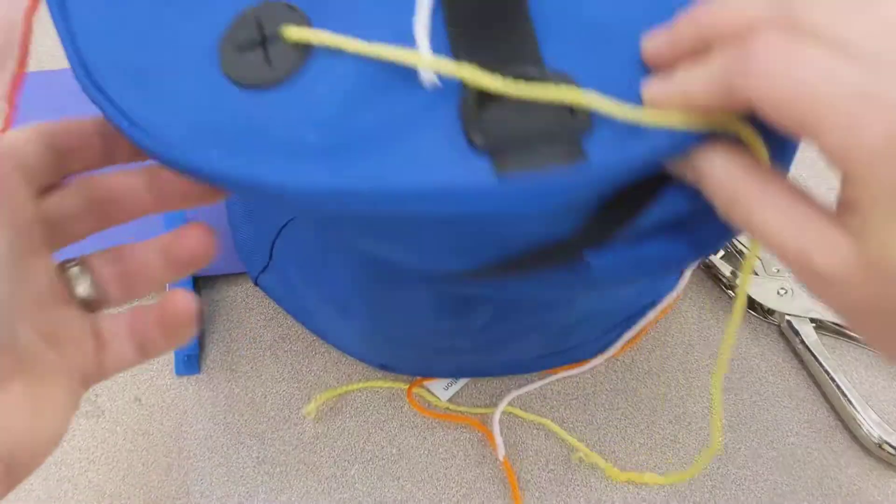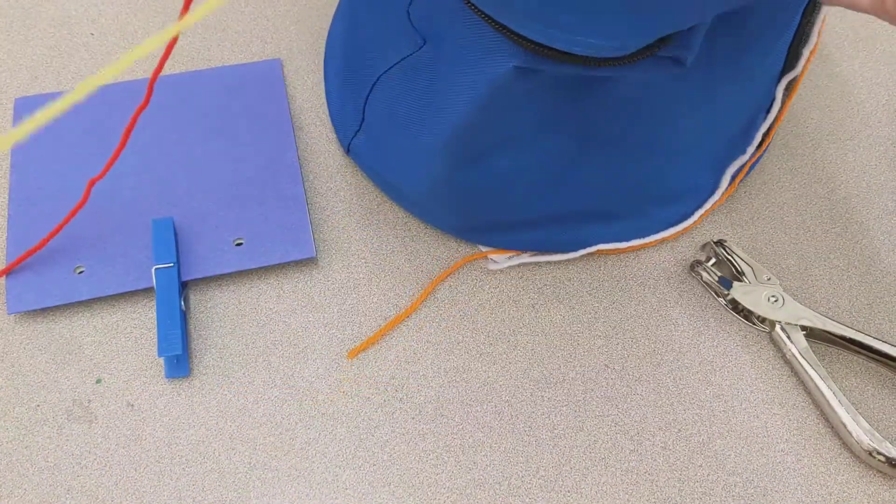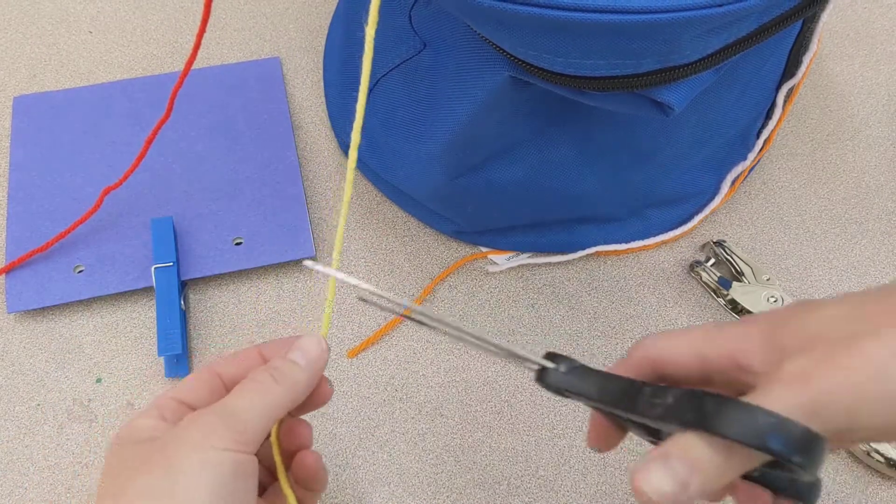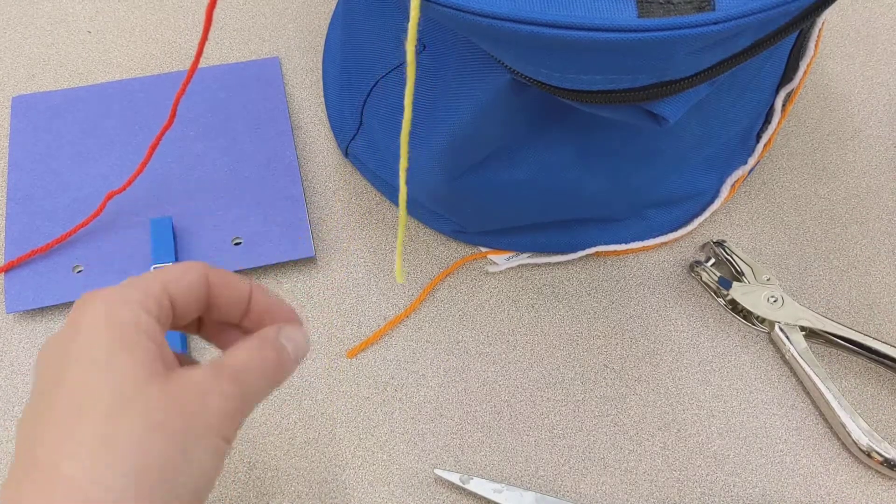Now I'm going to cut some string. When we cut string, we're going to pull out the amount of string that we need, and we're going to cut down here so that there's a tail hanging down. That way the next person can find the color that they want.